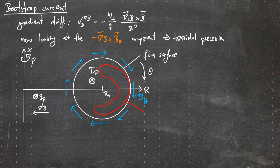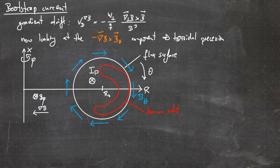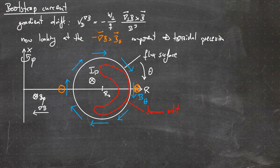The red line corresponds to a banana orbit. Now let's look at grad B times the poloidal magnetic field component. Making the cross product, with the grad B direction pointing to the left and the poloidal magnetic field component, we end up with the drift pointing here into the board. Looking at the minus sign, on the other side it points out of the board where the poloidal magnetic field is pointing upwards. At the top and bottom it points into the board.